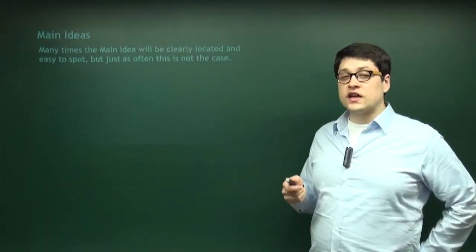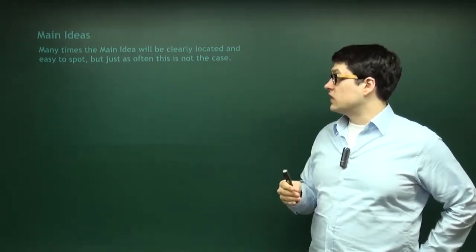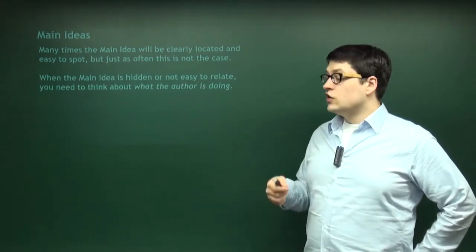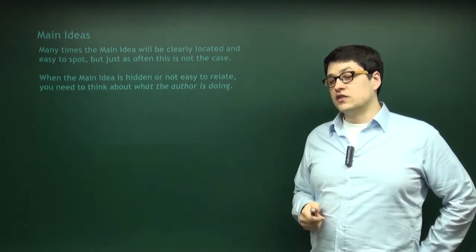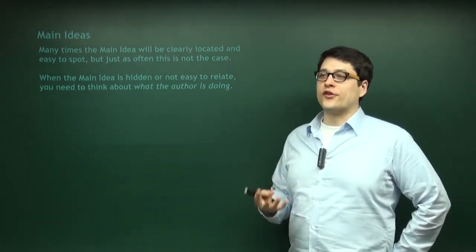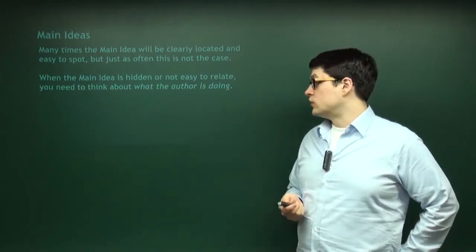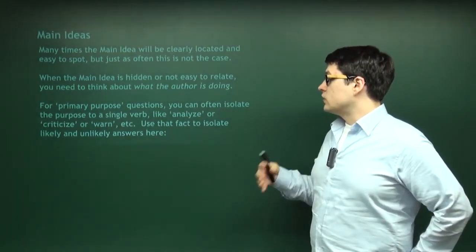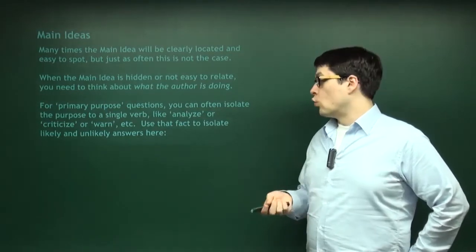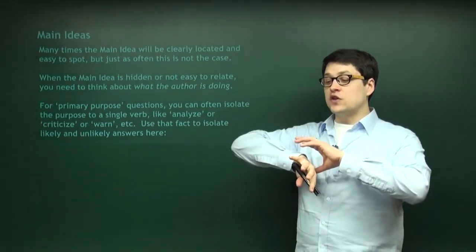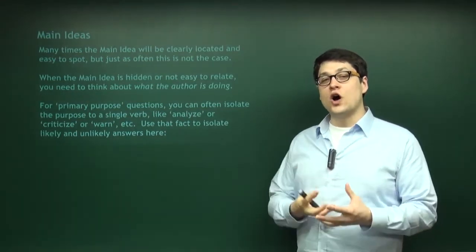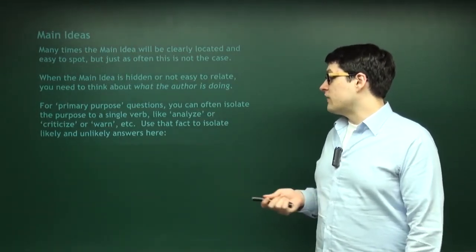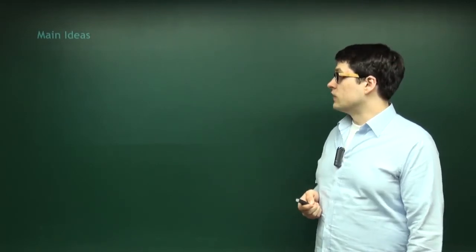Many times the main idea is clearly located right at the beginning of the passage or paragraph. But just as often this isn't the case. When the main idea is hidden, you need to think about what verb you can best use to describe what the author is doing. For questions like 'what's the primary purpose?' — just break it down to a single verb. Is she analyzing? Is she criticizing? Is she warning somebody? If you can summarize the whole passage into one single verb, use that to isolate the likely and unlikely answers.